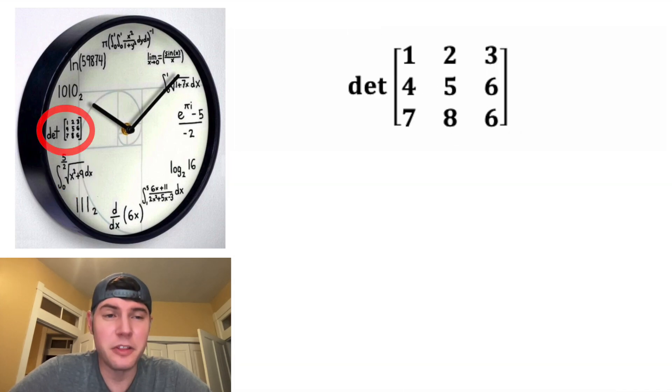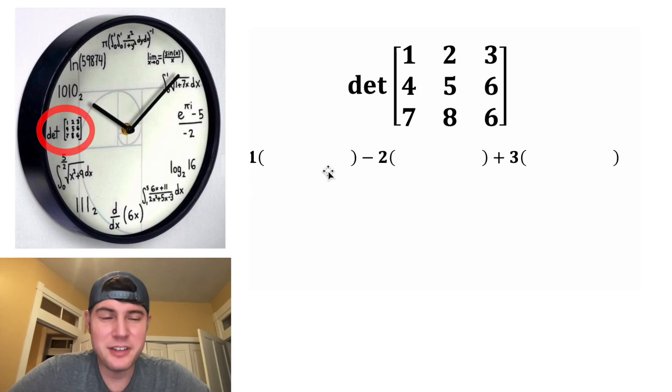For nine o'clock, we have a determinant of a three by three matrix. To calculate the determinant, we'll take three sets of parentheses. We'll bring down the one, the two, and the three. And we'll go plus, minus, plus. And then for the parentheses connected to the one, we're going to get rid of the column containing the one and get rid of the row containing the one. And we're going to do five times six minus six times eight. And then we start over again.